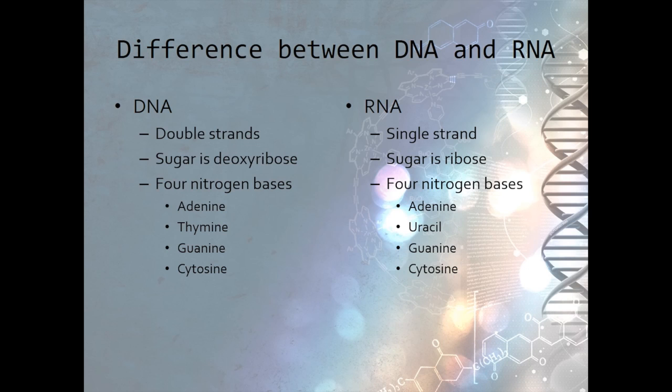Both DNA and RNA have four nitrogen bases. Remember the nitrogen bases for DNA are adenine, thymine, guanine, and cytosine. RNA has the same nitrogen bases as DNA, except for one. Instead of thymine, RNA has the nitrogen base uracil.